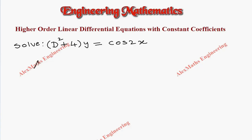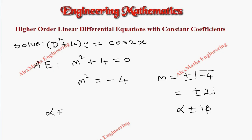As a first step, we have to write the auxiliary equation which is m² + 4 = 0. From this, m² = -4 and m is equal to plus or minus root of minus 4, which is ±2i. So ±2i, and it is in the form of α ± iβ. So by comparing, α is 0 and β is 2.